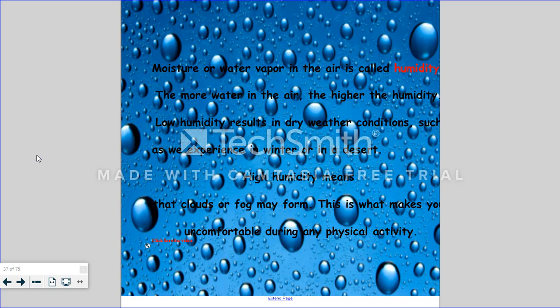Now another weather factor that we're going to discuss is humidity. This is moisture or water vapor in our air. The more water in the air the higher the humidity. When you have low humidity you get dry weather conditions. You might see this in the winter time. You might see this in a desert area. High humidity means that there's clouds or fog in the area. And high humidity can occur any time of the year.